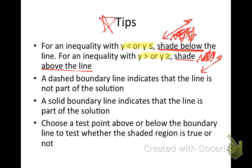A dashed boundary line indicates that the line is not part of the solution — I use a dashed boundary line when I have less than or greater than. A solid boundary line indicates the line is part of the solution — solid boundary line is used with less than or equal to or greater than or equal to. I can also choose a test point above or below the boundary line to test whether the shaded region is correct.